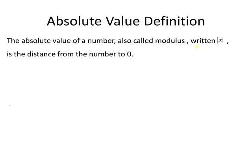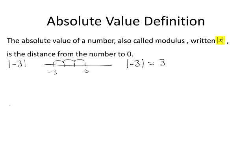The absolute value of a number is also called its modulus and is written in this form. It is the distance from the number to zero. For example, the absolute value of minus three is the distance from minus three to zero. On the number line, the distance from minus three to zero is one, two, three units, so the absolute value of minus three is equal to three.